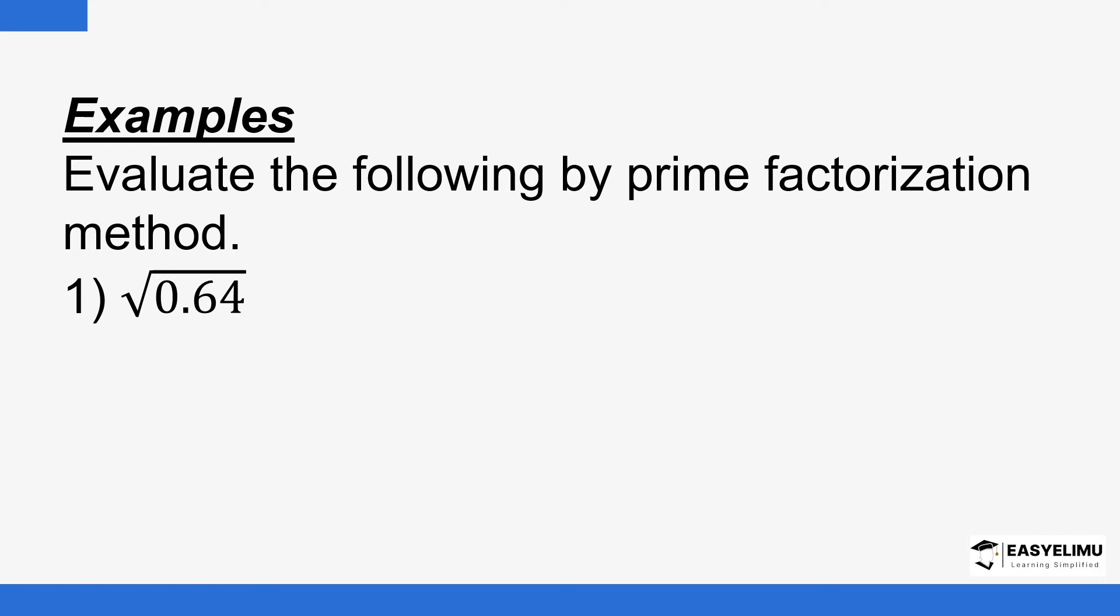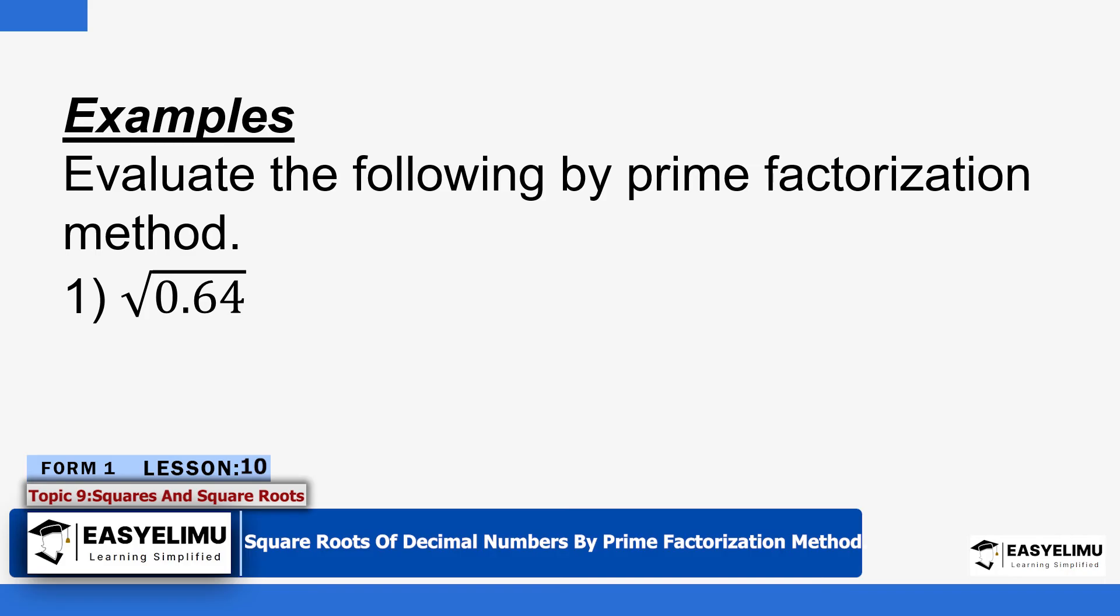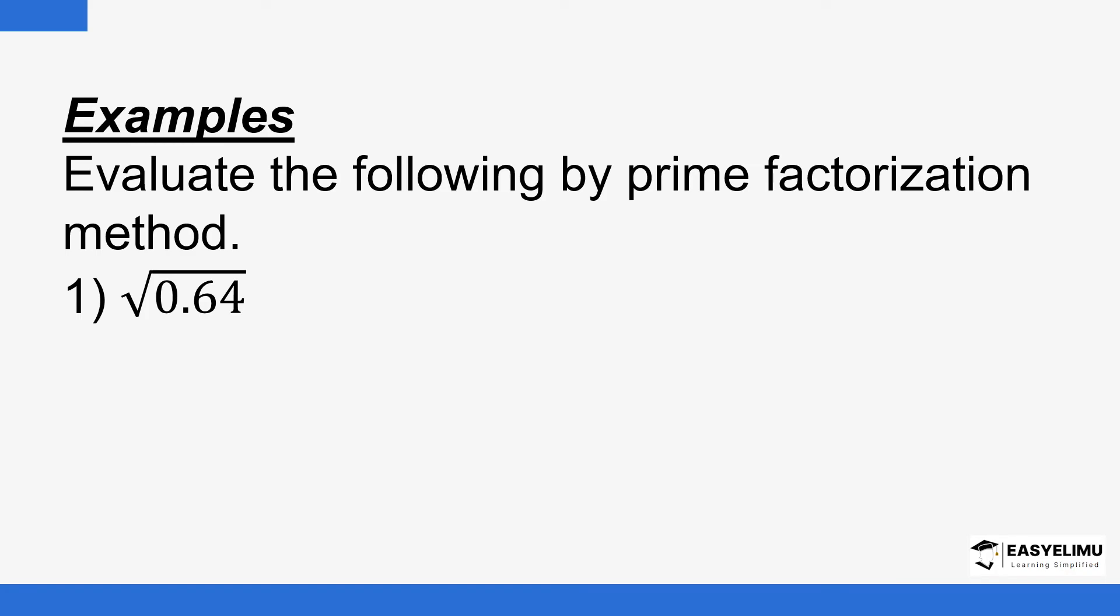So we have our first example here, 0.64. Remember the sign that we used for roots? It's as displayed on the screen. So the question is, evaluate the following by prime factorization method. So what you will do, you first of all, change this number into a fraction with a denominator being a power of 10.